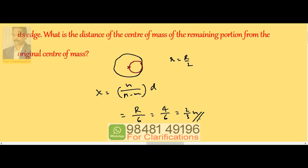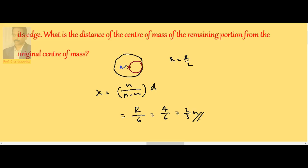The center of mass always shifts to the other side. If we call this x, then x is given by 2 by 3 meters.